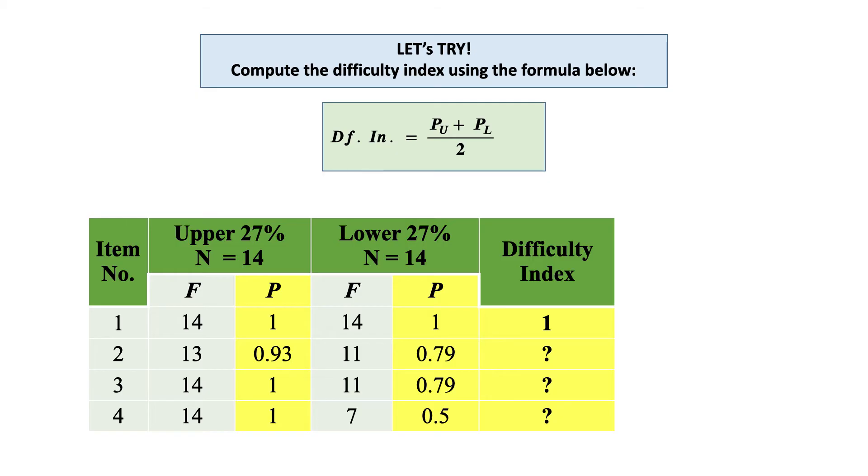Try it — get the difficulty index of items 2, 3, and 4.